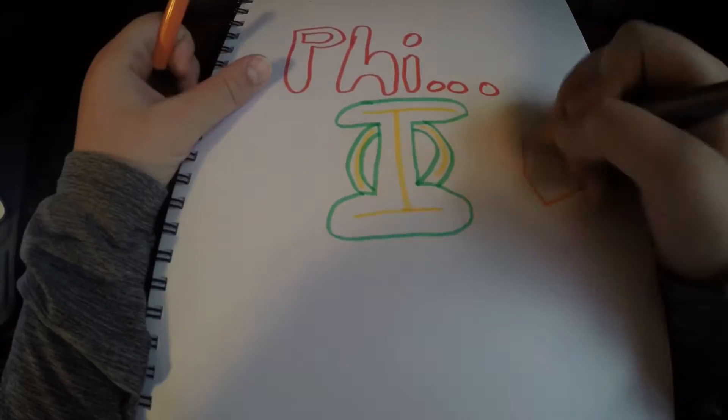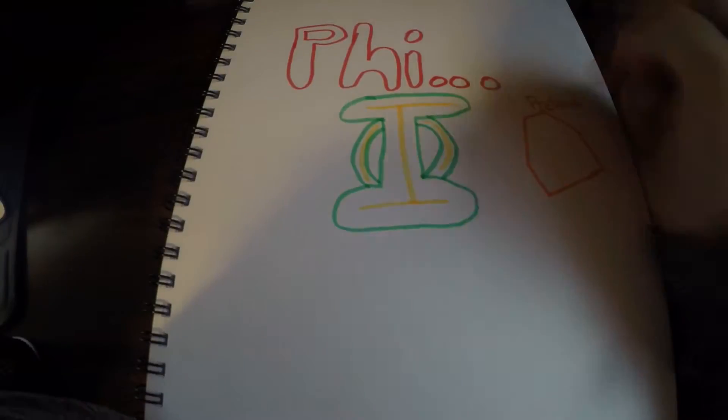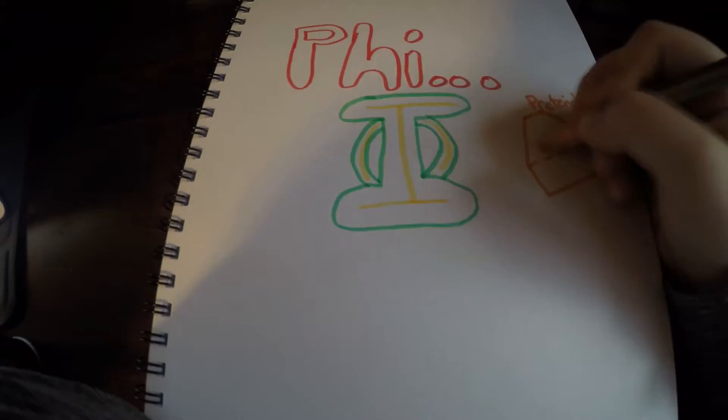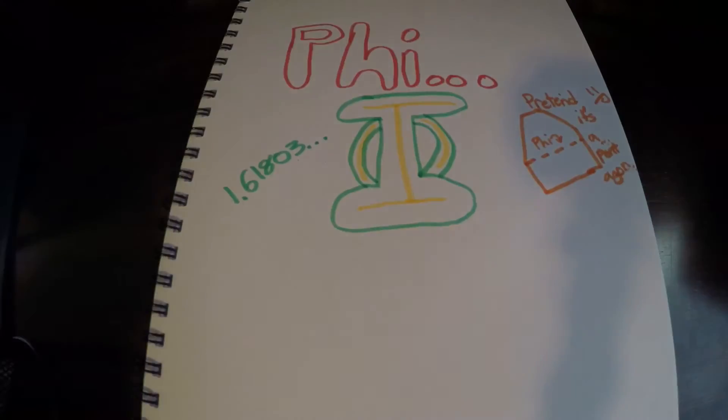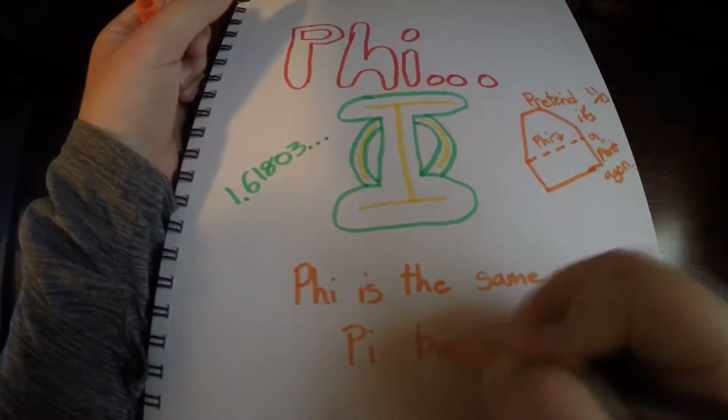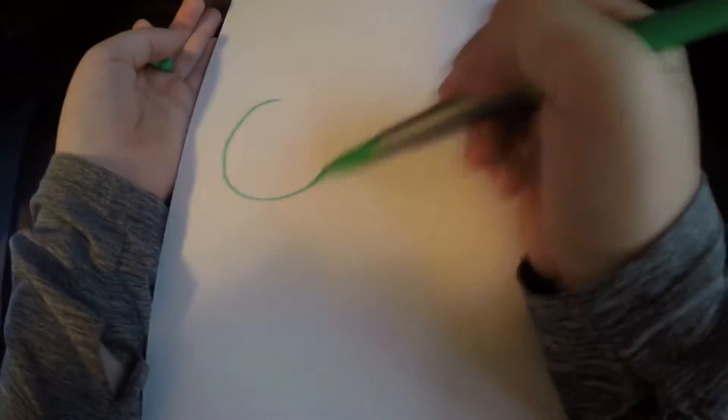So Pi: 3.1415926, or 962 — either one, I keep forgetting. And then Phi, known as 1.618033.